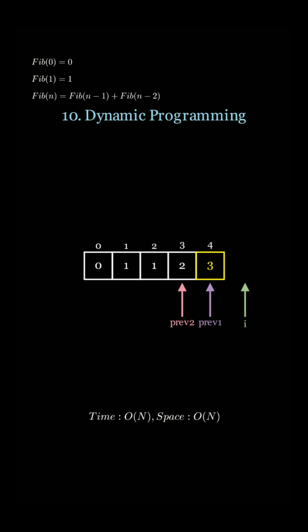The next question becomes, can we do better than O of N space? Can we do constant space? In this example, you realize that we didn't really need the entire array. We only cared about the last two numbers. So we could actually use two variables instead of an array resulting in O of N time, but constant space.